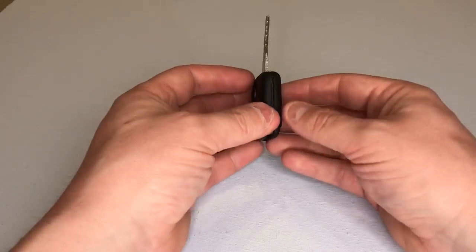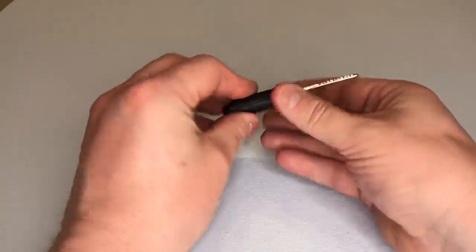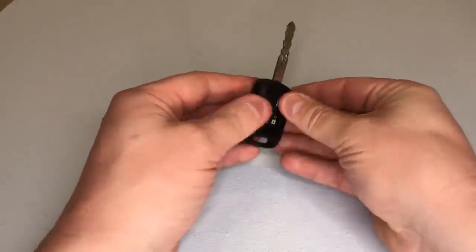And then we just pop the two halves of the key fob case back together. Make sure it all clicks in place.